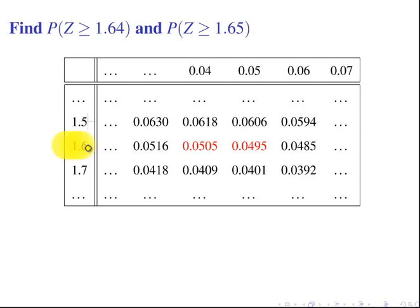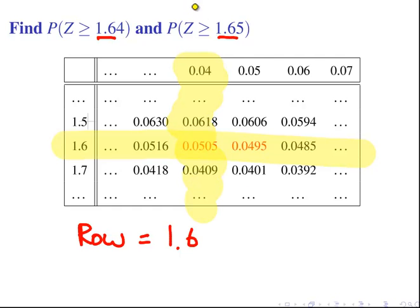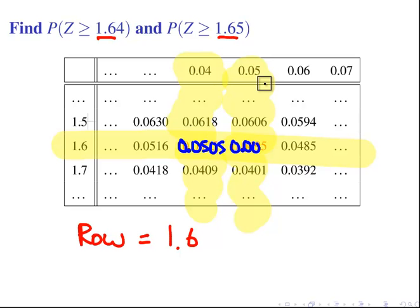So 1.6 in both cases. The row is 1.6 and the columns are 0.04 and 0.05. So the answer we are looking at is 0.0505 and 0.0495. Those are the answers there, just the intersection of both.